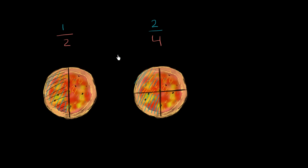Even though I'm using different numbers here — one in the numerator and two in the denominator for one half, versus two in the numerator and four in the denominator — these two fractions represent the same quantity. I ate the same amount of pizza. If I eat two fourths of a pizza, two out of four equal pieces, that's the same fraction of the pizza as if I eat one out of two equal pieces. So we would say that these two things are equivalent fractions.